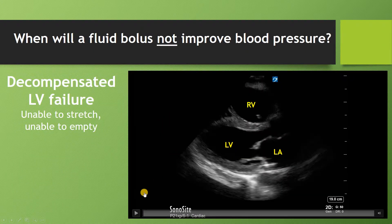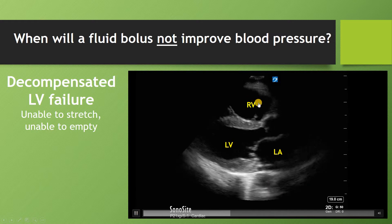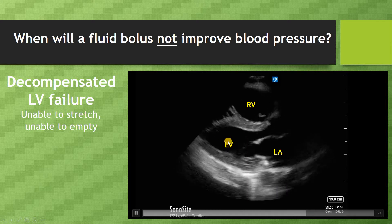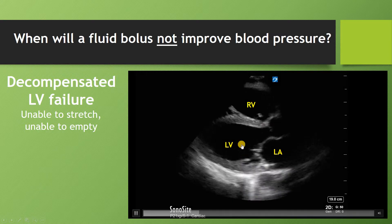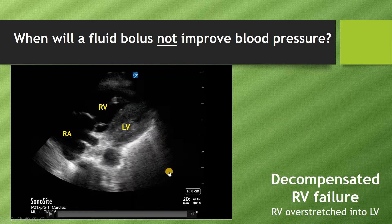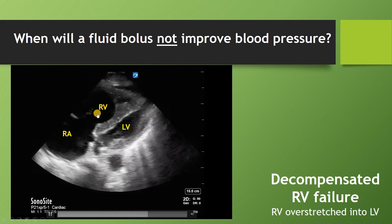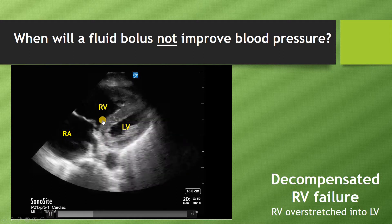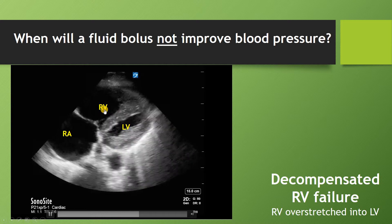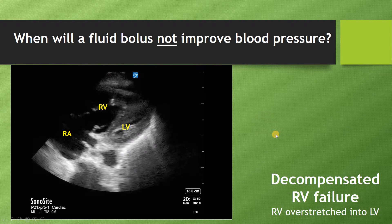When will a fluid bolus not improve blood pressure? One situation is really decompensated left ventricular failure. Here's an echo — left atrium, left ventricle, and right ventricle. In this situation the left ventricle is unable to stretch further or empty, so when you fluid load this patient there's nowhere for it to go except back into the lungs. Similarly, in decompensated RV failure or pulmonary hypertension, the RV gets so overstretched that it pushes into the LV, further restricting LV filling. More fluids just further overload the RV and worsen LV function.